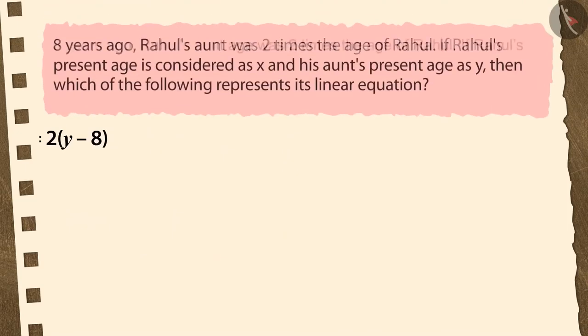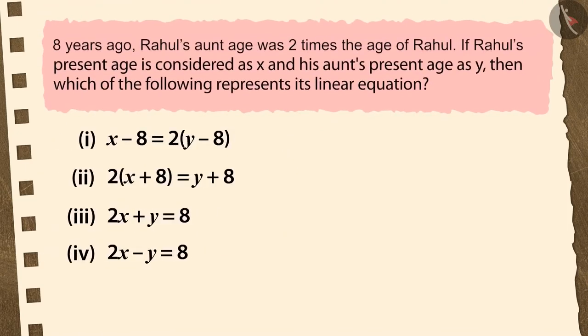Let's look at another example. 8 years ago, Rahul's aunt's age was 2 times the age of Rahul. If Rahul's present age is considered as X and his aunt's present age is Y, then which of the following represents its linear equation?